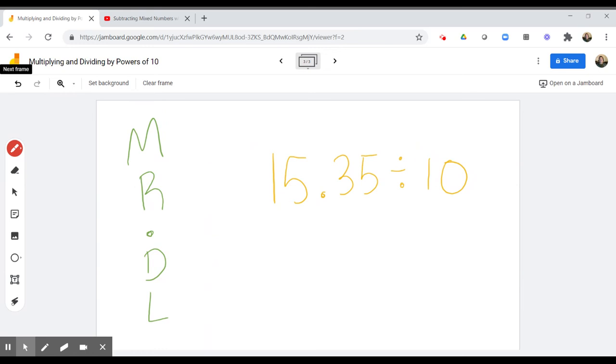Okay, now this is an example that's division. Once again, Mr. DL is going to remind us that when we multiply by a power of 10, the decimal will move to the right. And when we divide by a power of 10, the decimal is going to move to the left.